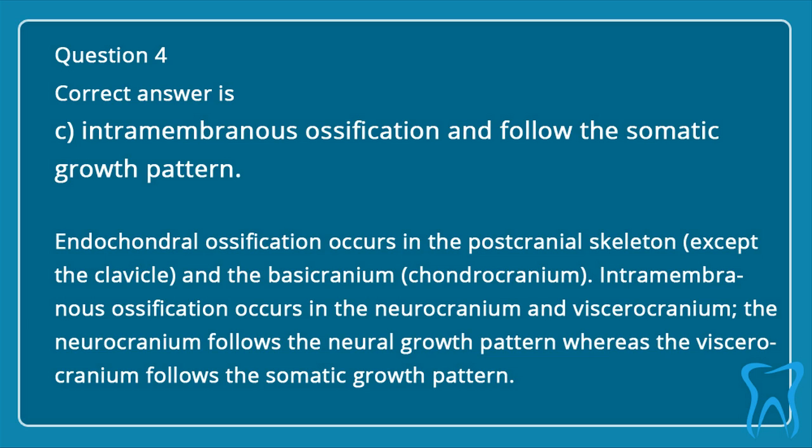Endochondral ossification occurs in the postcranial skeleton, except the clavicle, and the basicranium (chondrocranium). Intramembranous ossification occurs in the neurocranium and viscerocranium. The neurocranium follows the neural growth pattern whereas the viscerocranium follows the somatic growth pattern.